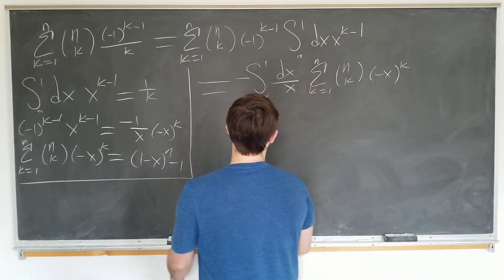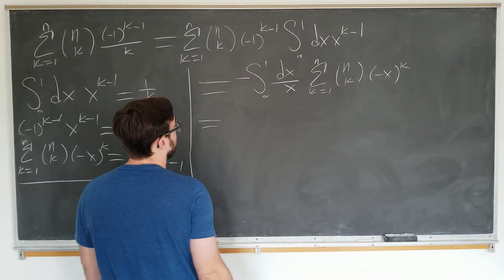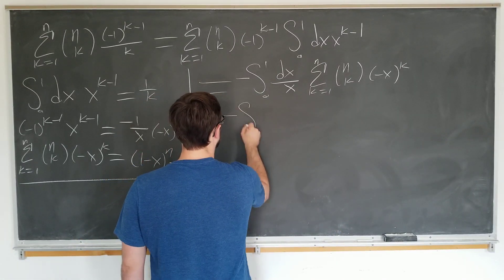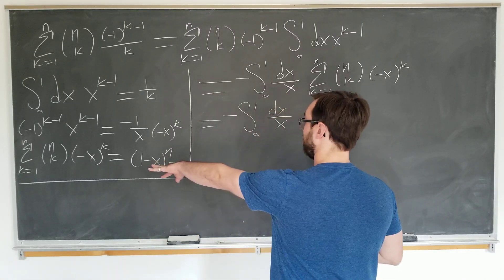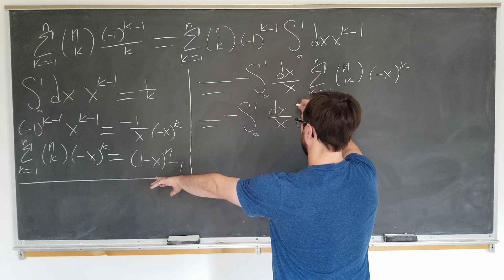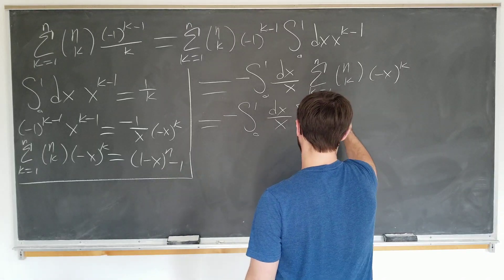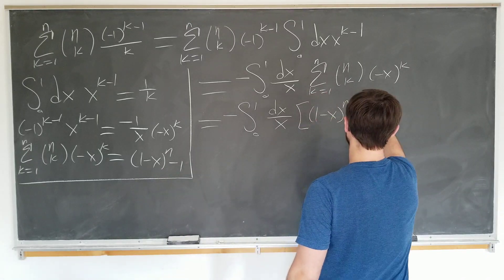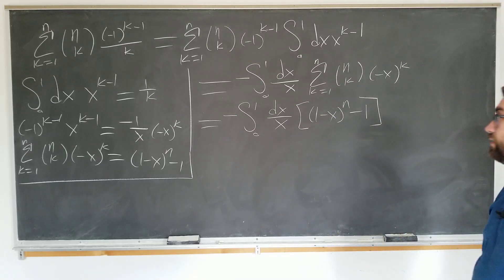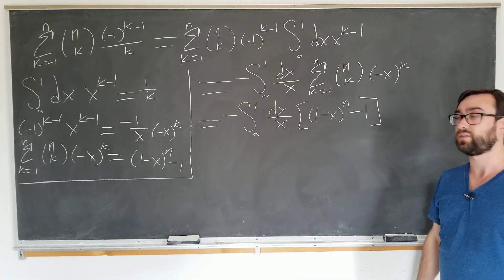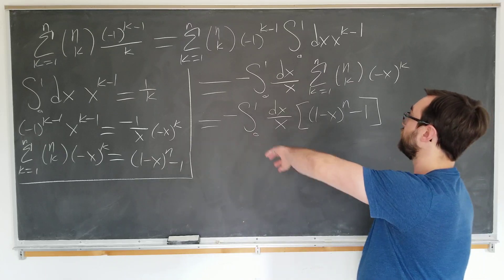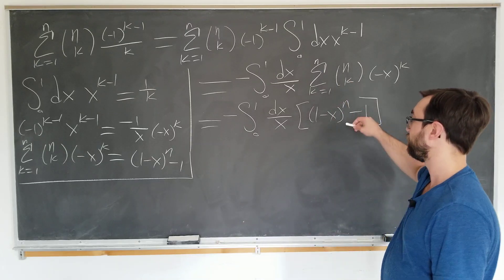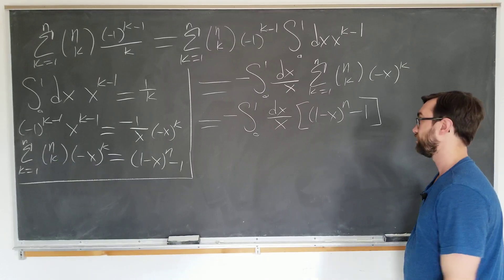First we're going to write down what we just derived here. We're going to note that this is now minus integral from zero to one dx over x. We're just going to put the sum here. This is actually equal to one minus x to the n minus one. So you see what we've done here. We interchanged the values, sorry, the order of operations. We did the integral second. We did the sum first and now we're going to do the integral since it's easier to do that.